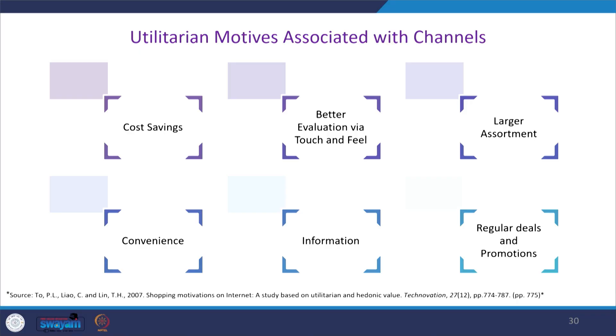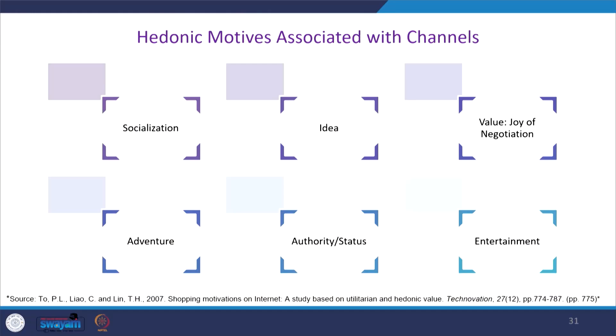Online channels offer much more convenience for information — product reviews are just a click away, accessible anytime. Regular deals and promotions are another key utilitarian motive: discounts on product and service offerings are seen much more often in online channels, and coupon usage is much easier online. This is one of the most important utilitarian motivations — making an effort to pay less than regular prices through regular deals and promotions.